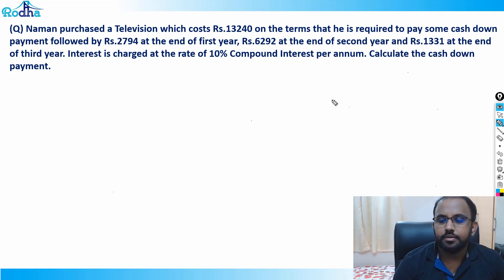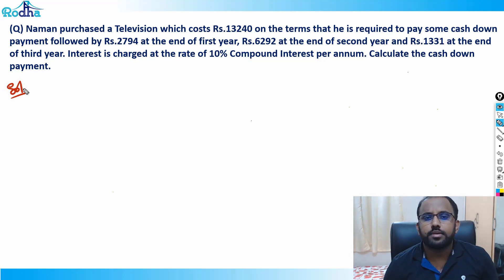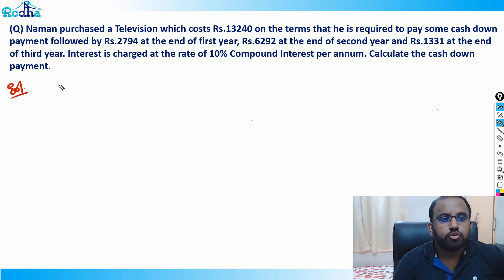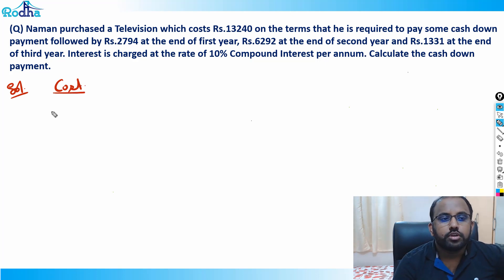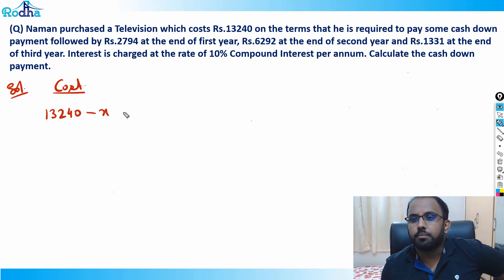Let's look at the next question. This is again a replica of the last concept, which will give you a good command over it. Naman purchased a television costing ₹13,240. He is required to pay some cash down payment — let's say X rupees is the cash down payment here.